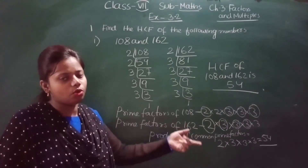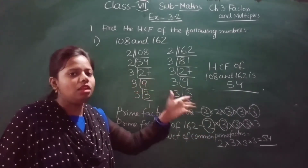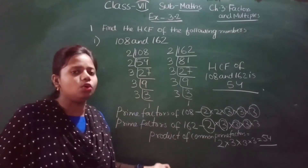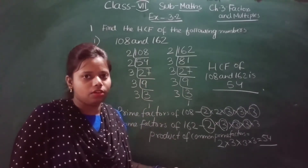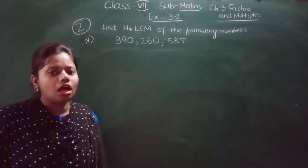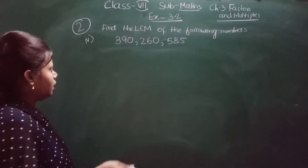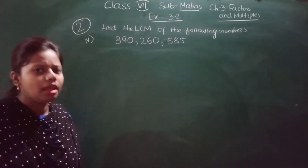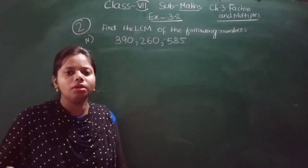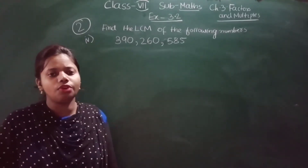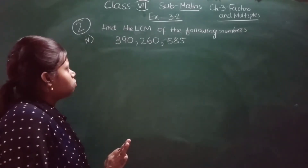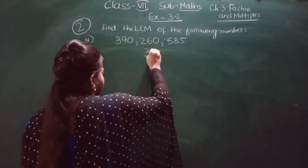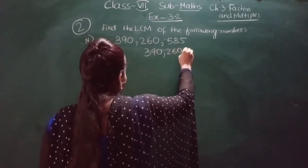In the same way you can solve the other HCF questions. You can use any method — long division method, common division method, or prime factorization method. Now let us do question 2, which says: find the LCM of the following numbers. LCM means Least Common Multiple. The numbers given are 390, 260, and 585.